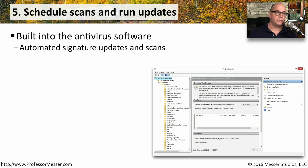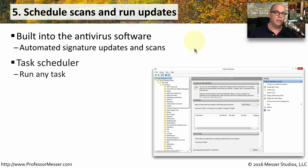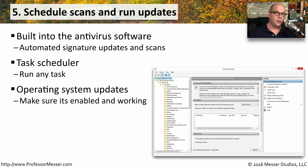Now that we feel we've removed the malicious software, it's time to get your system back up and running again. One of the first things you should do is make sure your antivirus software has a schedule to automatically update the signatures — you can usually do this in the antivirus software itself, or integrate it into the Windows task scheduler. You'll also want to make sure your system is configured to automatically install operating system updates, which will be especially useful for stopping known security problems and keeping your operating system as safe as possible.